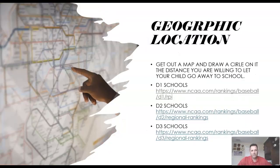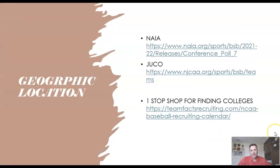First, let's talk about geographic location. Every family is different, every student is different. What we're going to do is get an old-fashioned map out, get a compass, and draw a circle on the distance you're willing to go from home to school. Find every school inside that circle that you believe you can compete at athletically and academically, and reach out to those coaches via email, phone calls, social media, etc. There are links provided to find D1, D2, D3, NAIA, and JUCO schools, as well as a one-stop shop for finding most colleges.